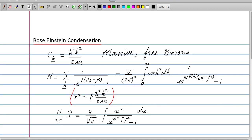In order to arrive at n/V times λ³ = 4/√π times an integral x²dx over e^(x² - βμ) - 1, and the expression on the right-hand side after performing the integral over x, which runs from zero to infinity, only depends on βμ. So we define this as the function g depending on βμ.